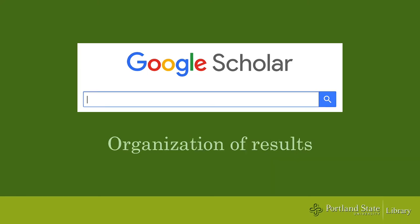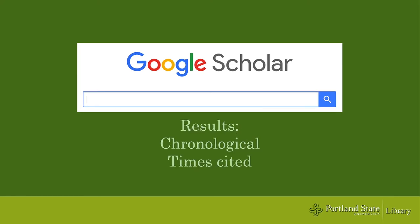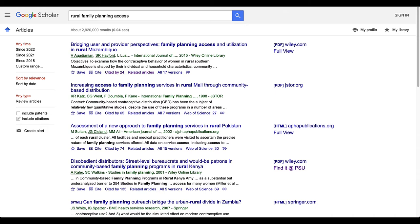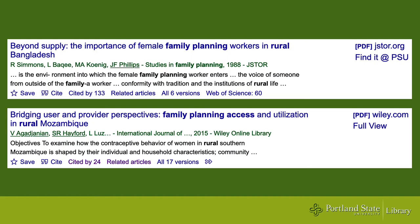It's also important to recognize how Google Scholar organizes its results. The results are not chronological like in other databases. In Google Scholar, they organize the results by how many times something has been cited, as well as what the algorithm perceives as relevance. The results you see on the first page might end up being quite old — on this first page of results, for example, the articles range in age from 1988 to 2015.